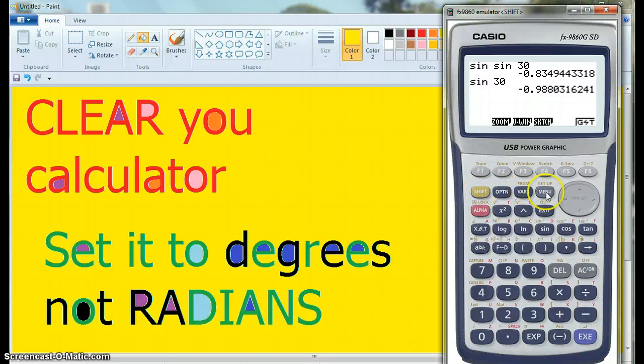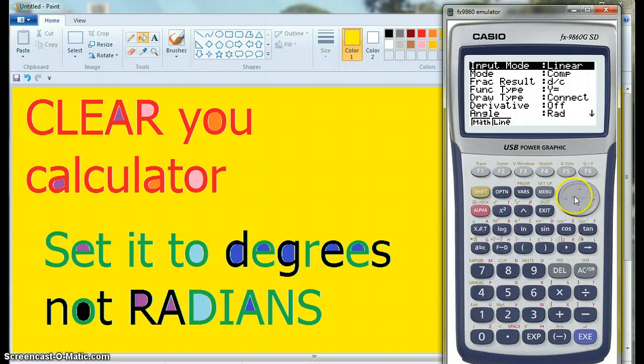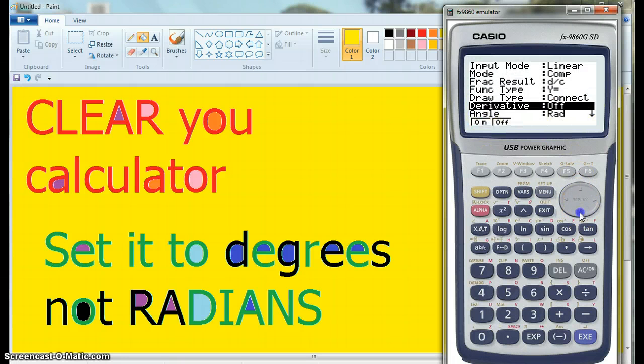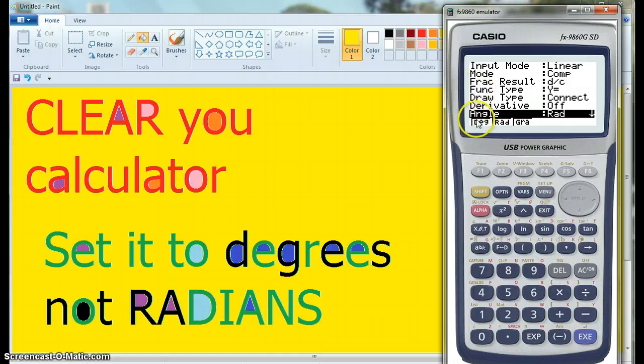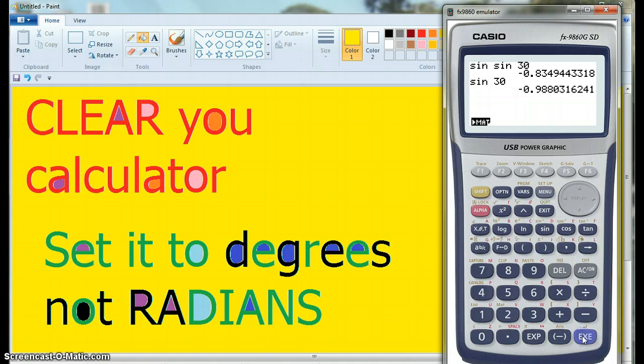So I go shift, setup. See here it says angle radian, not what I want for year 11. So I go here, and I put degrees, and I put execute.